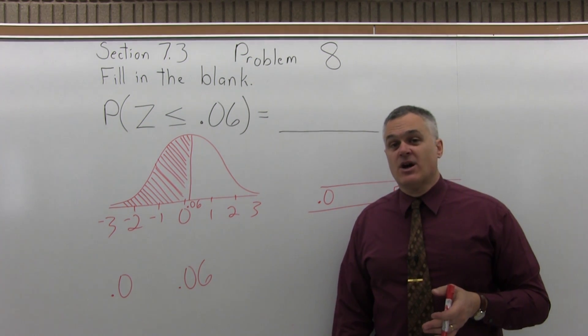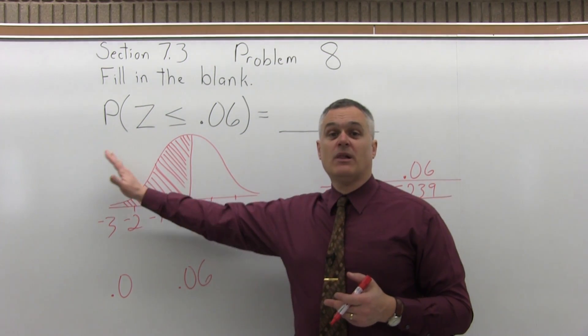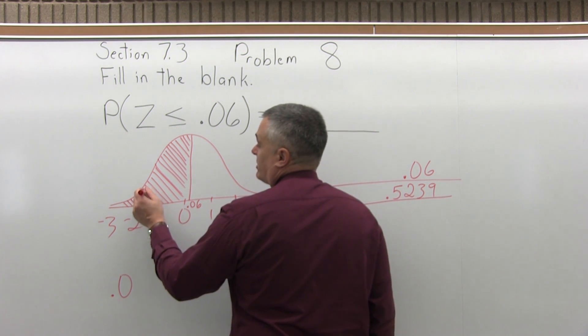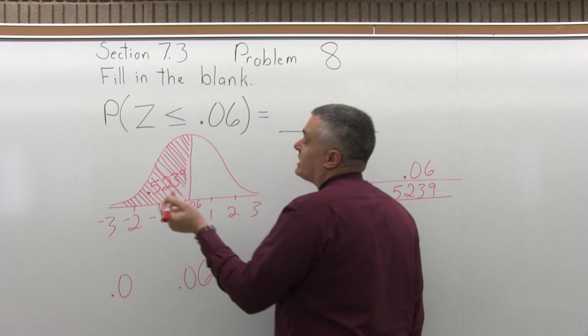So the way the chart is set up, the answer that it gives you is the area to the left of what you've looked up, which is exactly the answer that we're looking for. So 0.5239 is the shaded area.